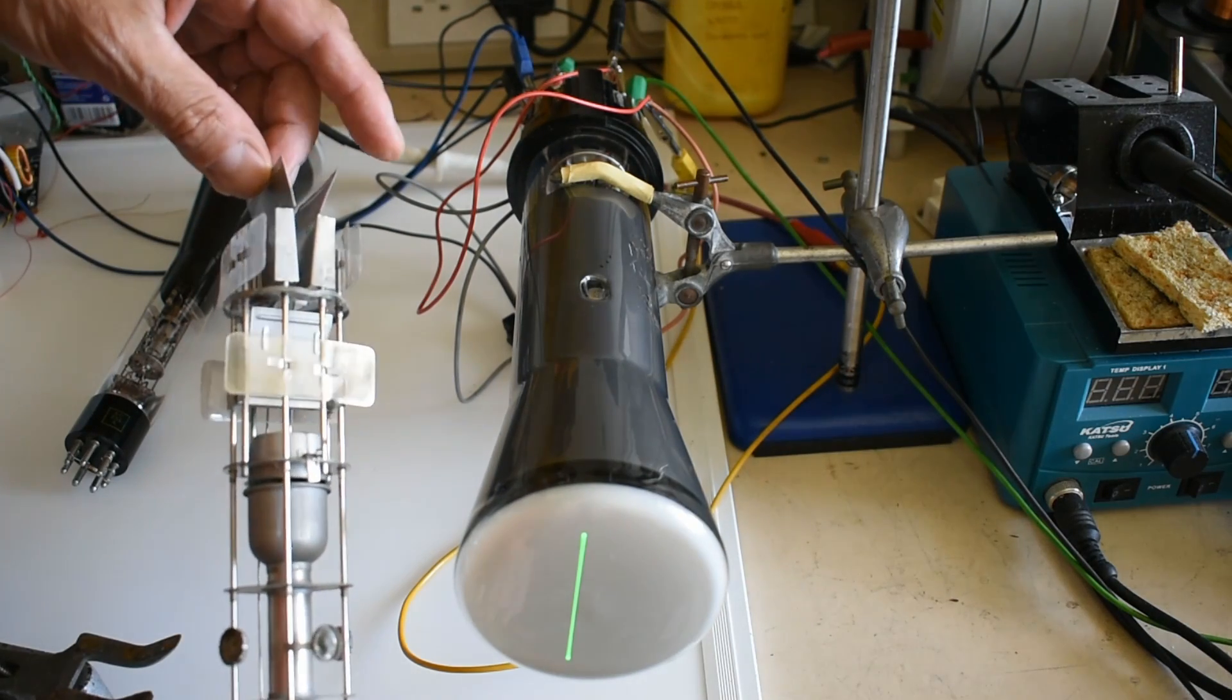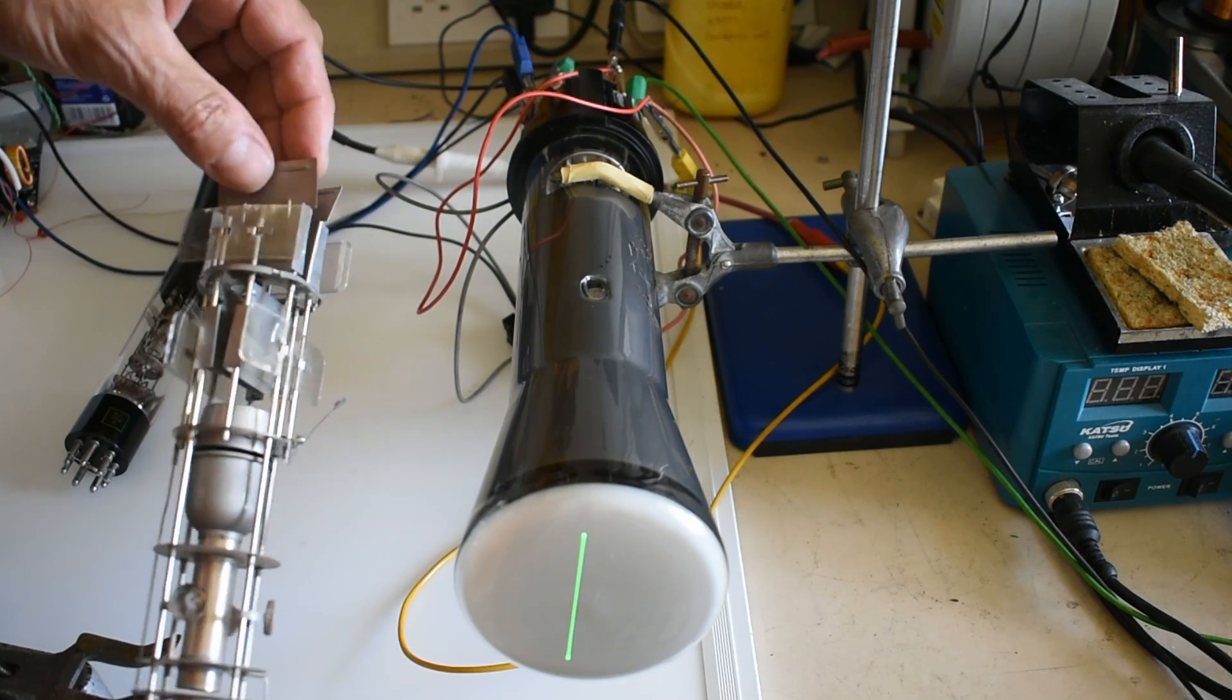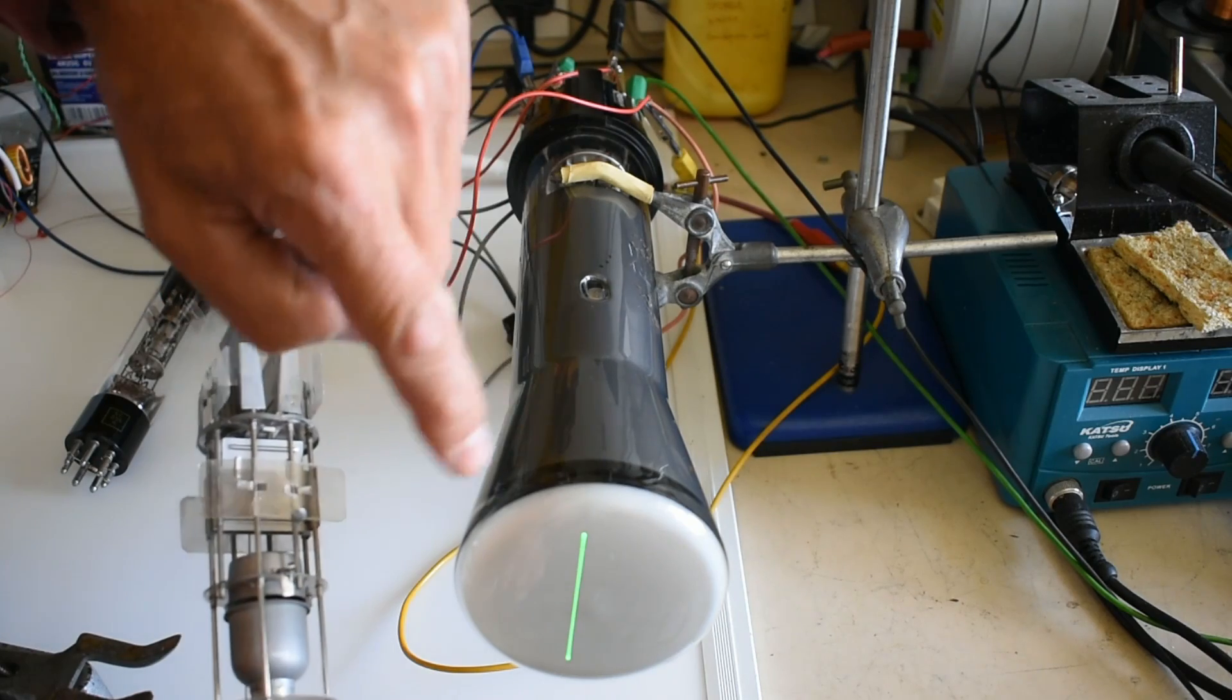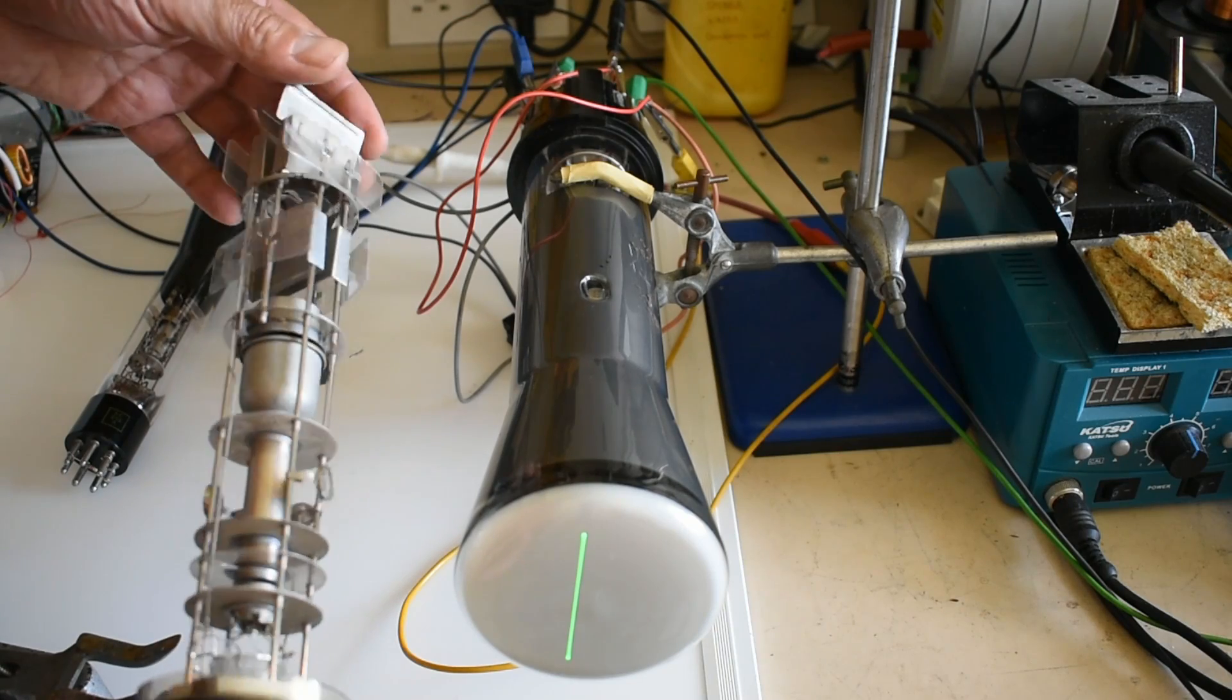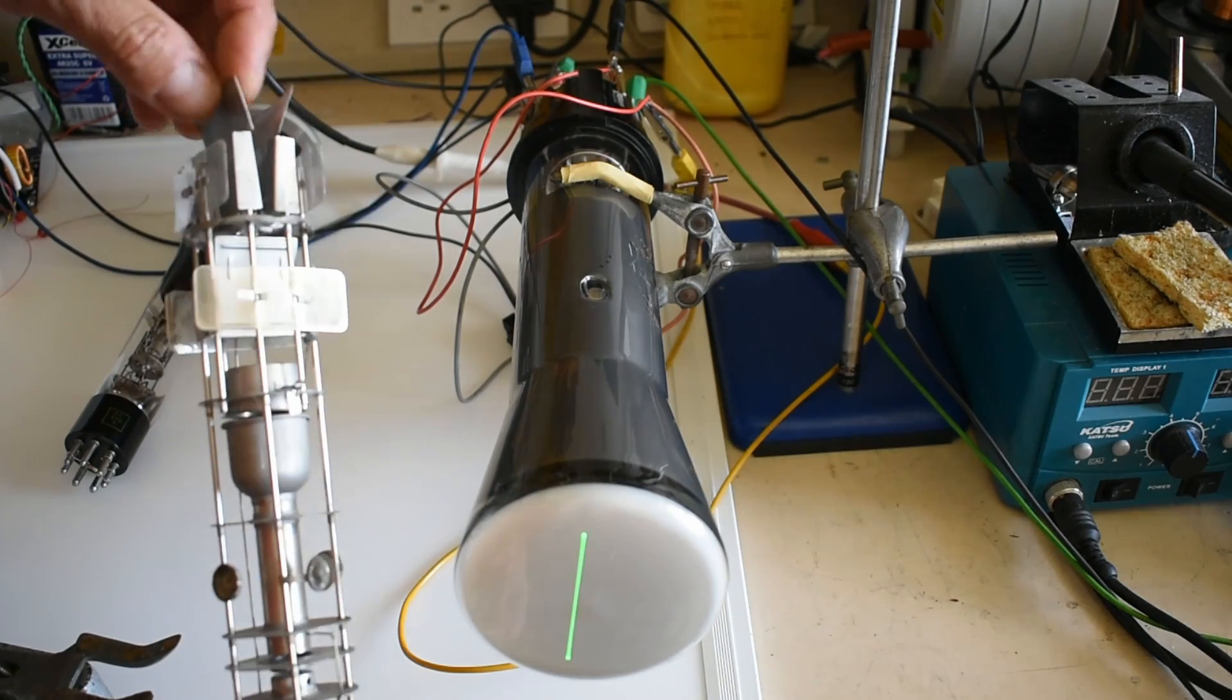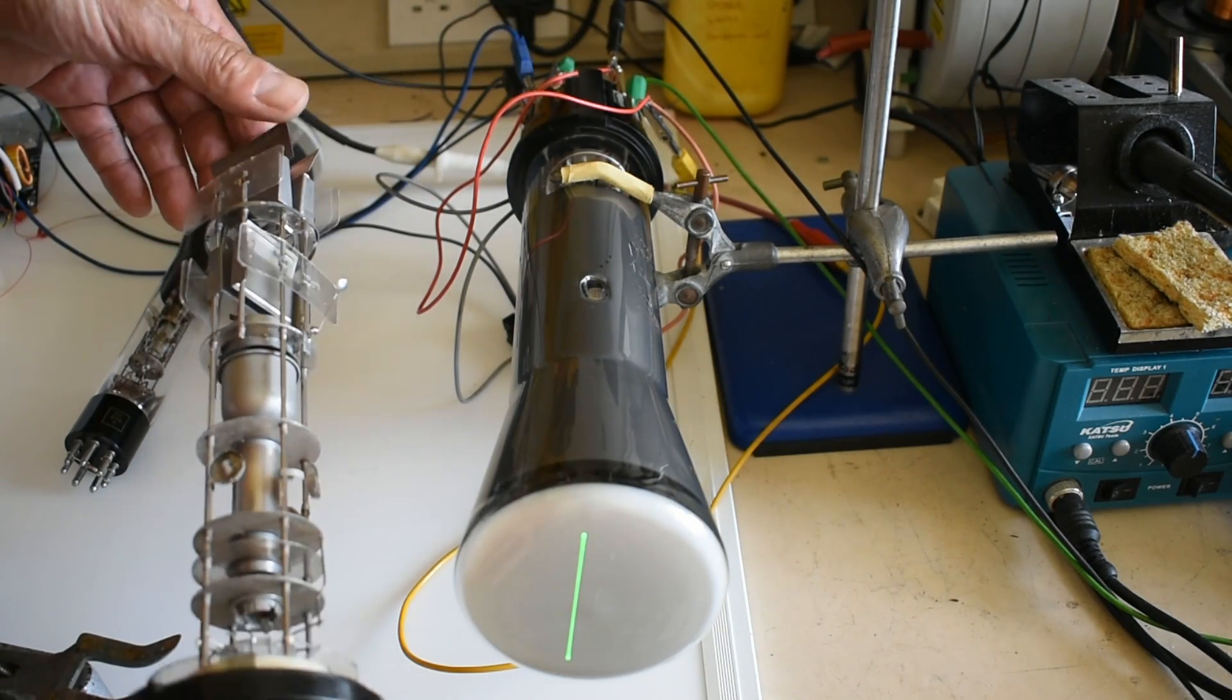If the X or Y plates are left or any of these are left floating they charge up and deflect the beam so the beam may not appear on the screen. Which is one of the frustrating things when you're trying to connect up an oscilloscope tube if you don't really know what all the pins are. Because sometimes it will be operating but you won't get a beam out of it because it's deflected into the casing or something somewhere.